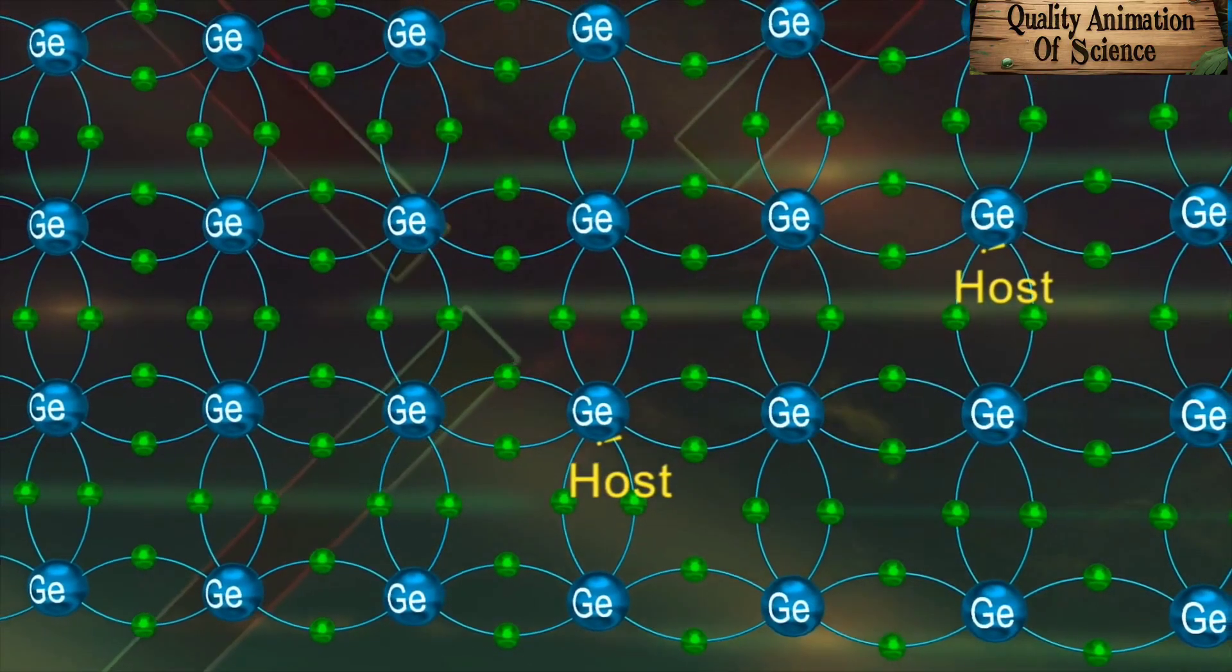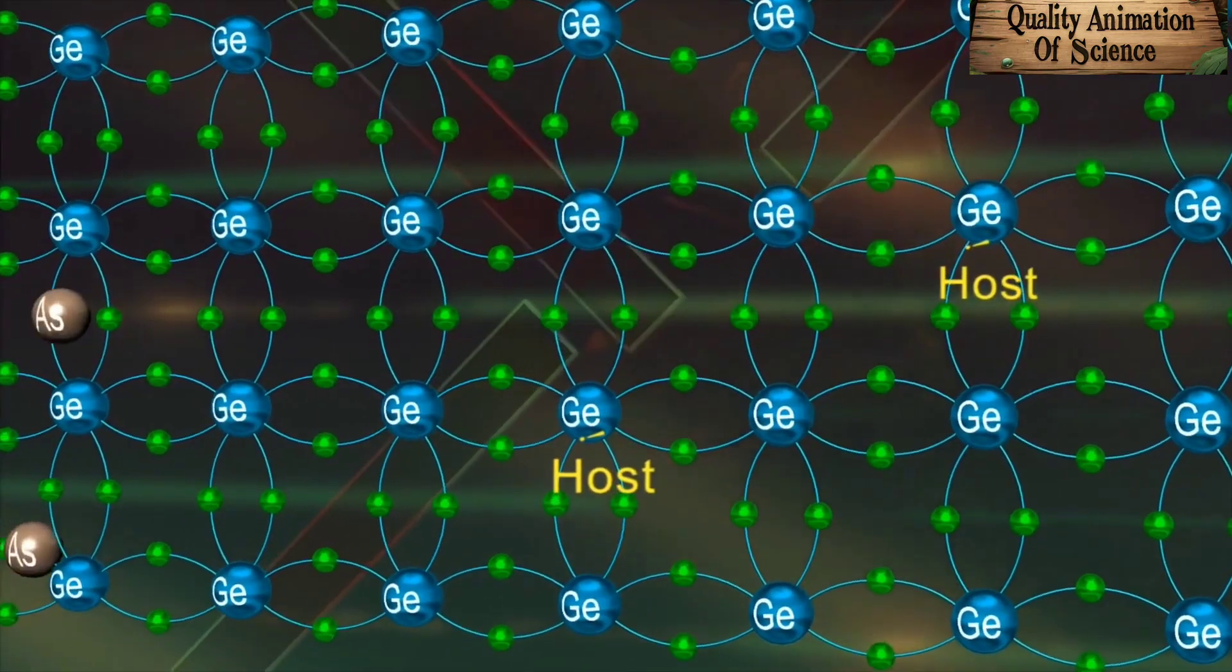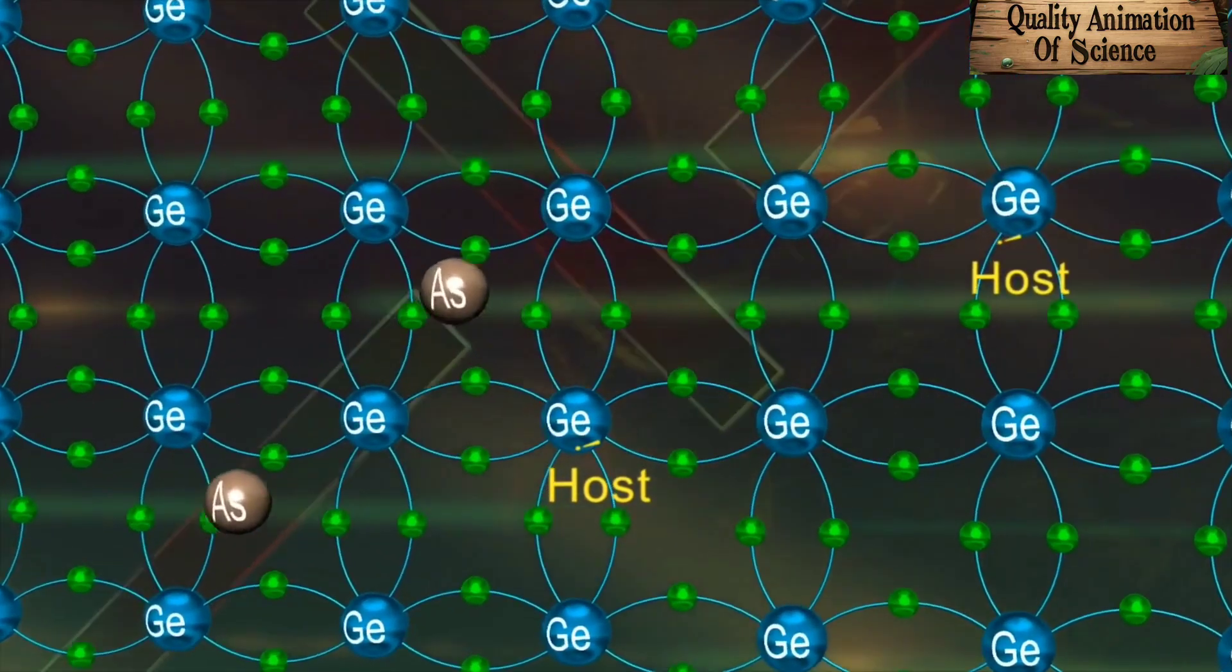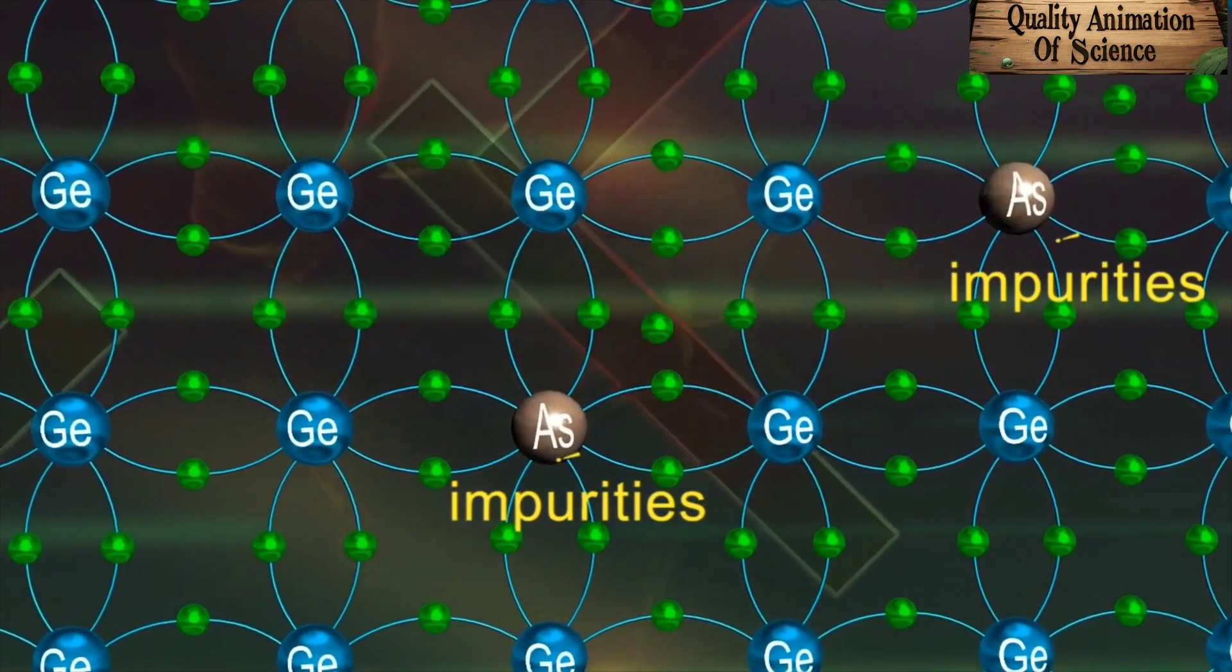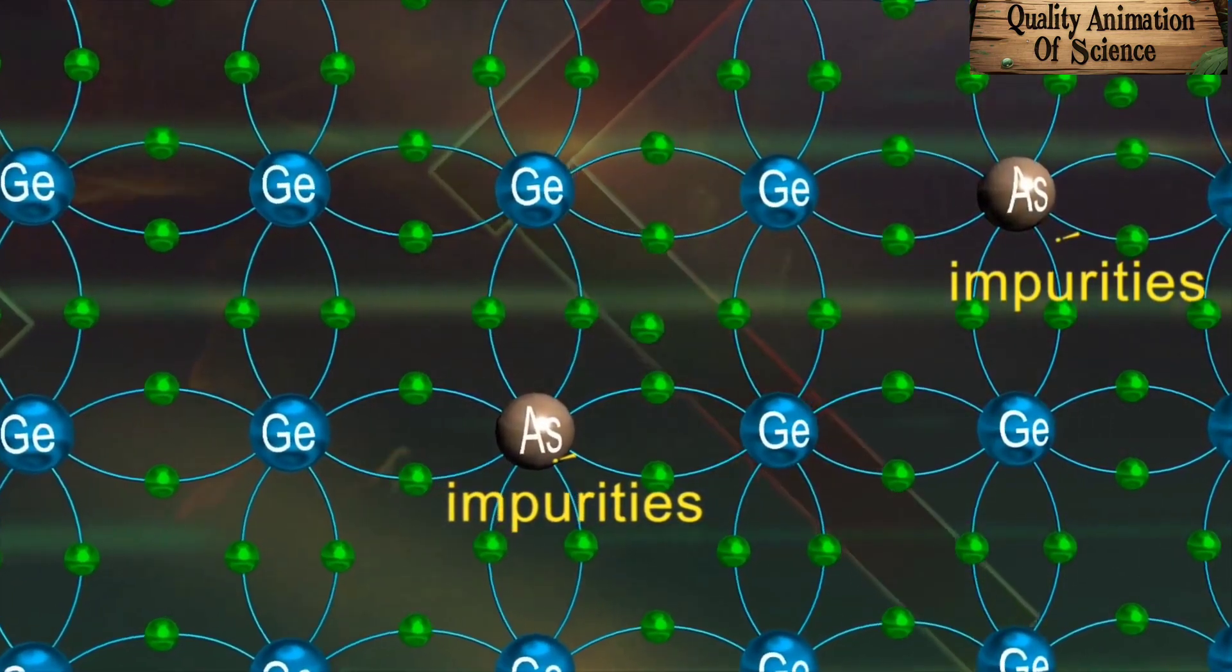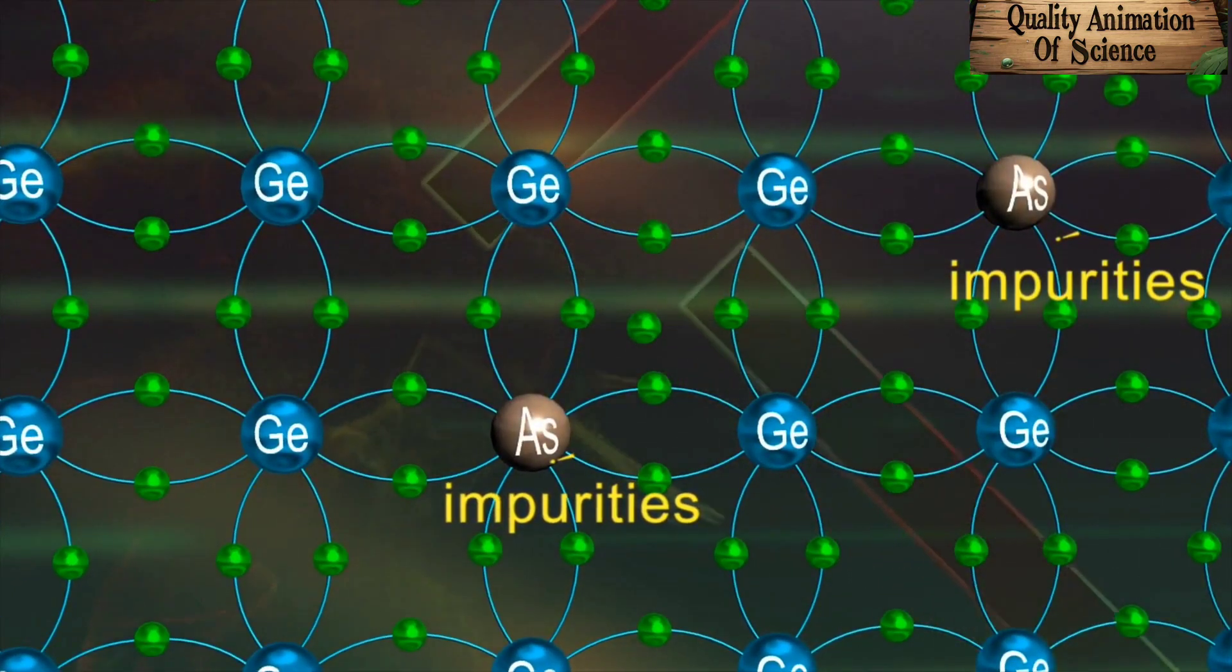Electrical properties of intrinsic semiconductors can be greatly modified by adding small amounts of suitable impurities. The impurity atoms replace some of the host atoms at their lattice sites.